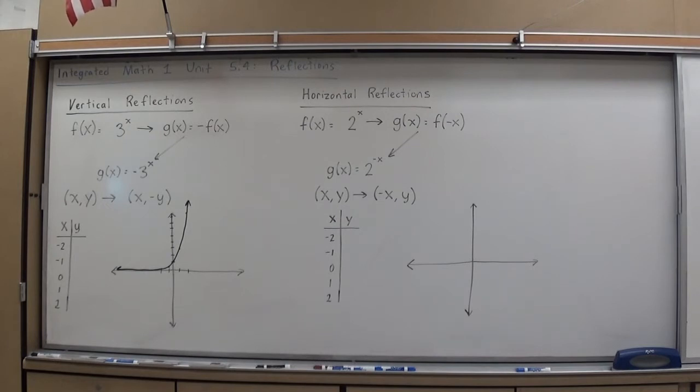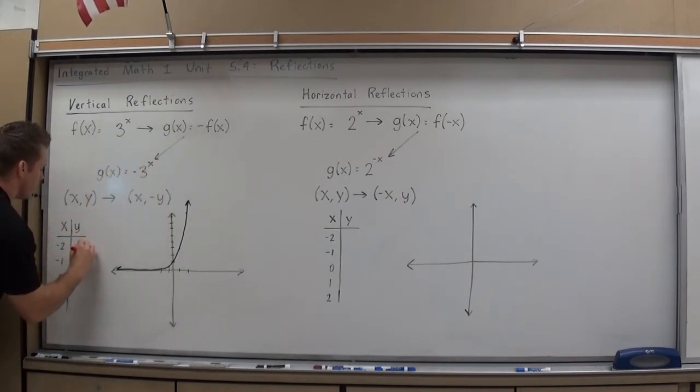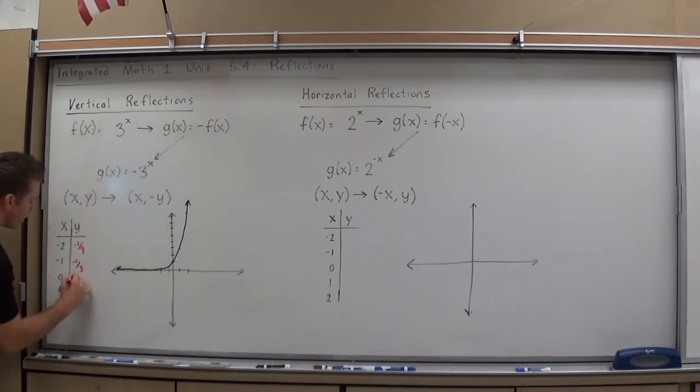Now, vertical reflection-wise throws a negative out front. Let's see what that does to the table values. So 3 to the negative 2 is 1 ninth times a negative 1 makes it negative 1 ninth. 3 to the negative 1 is 1 third made negative is negative 1 third. 3 to the 0 is 1 made negative is negative 1. 3 to the 1 is 3 made negative is negative 3. 3 to the 2 is 9 made negative is negative 9.